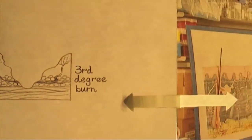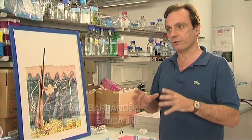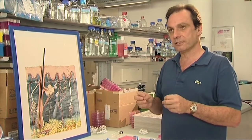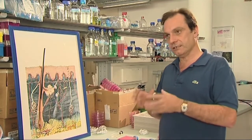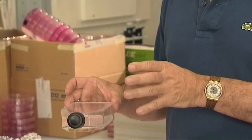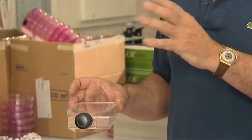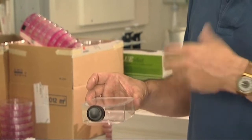Wenn jemand schwere Verbrennungen erlitten hat, entnehmen wir eine Hautprobe aus einer gesunden Region, sezieren sie und lösen die Zellen heraus. Diese Zellen säen wir dann in einer Zellkulturflasche aus. Dort füttern wir sie mit einer Lösung aus Proteinen und Zucker. Die Zellen müssen nämlich essen. Irgendwann beginnen die Zellen dann, sich zu teilen, bis der ganze Boden der Flasche bedeckt ist.